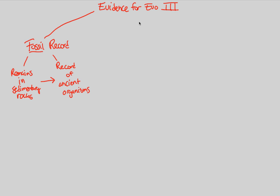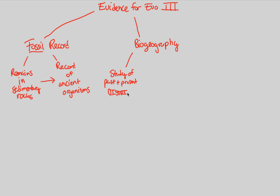The last piece of evidence for evolution to understand is something known as biogeography. We can look at the biology of the geography of the Earth. Biogeography is defined as the study of past and present distribution — past and present distribution of organisms. That's the key term here.